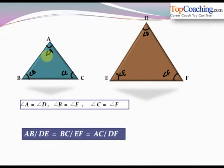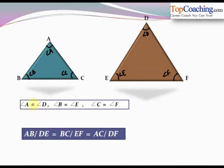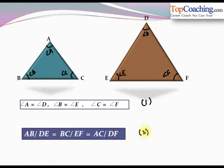For two triangles ABC and DEF to be similar, angle A must be equal to angle D, angle B must be equal to angle E, and angle C must be equal to angle F — that is, the corresponding angles must be equal. The second condition is that the corresponding sides must be in the same ratio: AB/DE = BC/EF = AC/DF. Thus, triangle ABC is similar to triangle DEF.